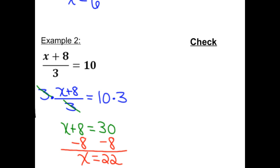Now we're going to check it, make sure that's right. So we're going to substitute the 22 in for the x, add 8 to it. And then we're going to divide by 3 and see what happens. 22 plus 8 is 30. 30 divided by 3 is 10. And so it checks. And we're good.